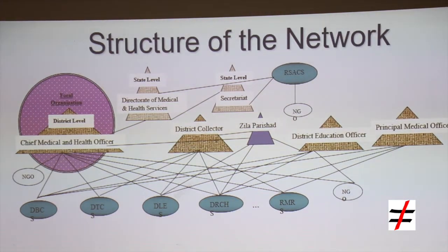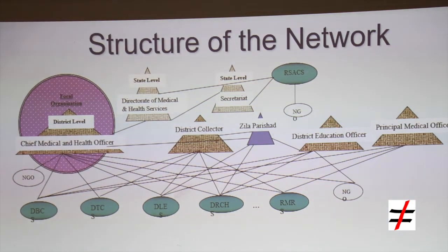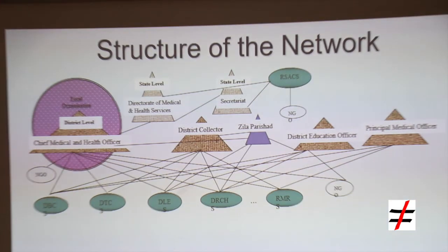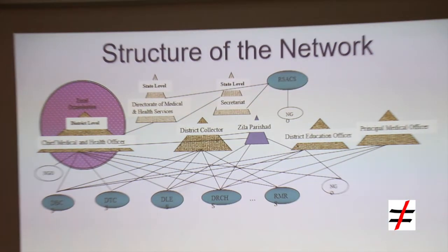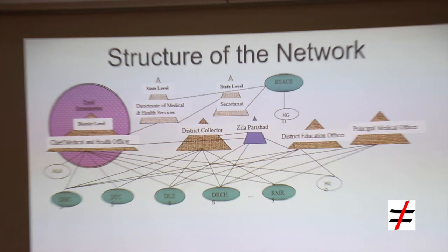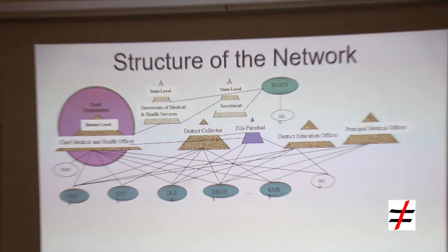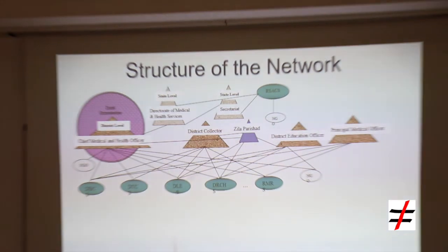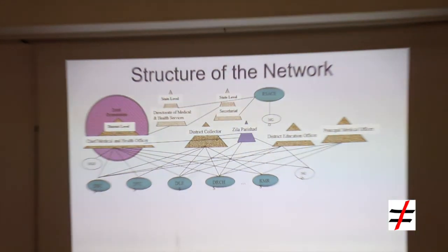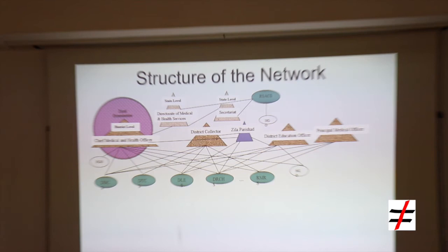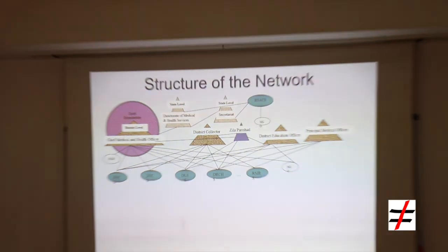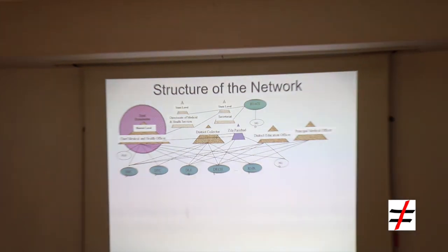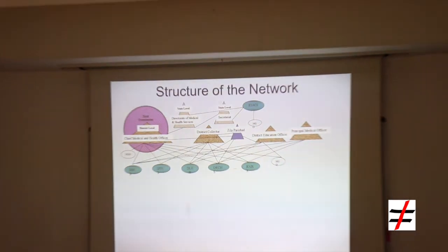I have also conceptualised the formation of agencies, which is called agentification. At the state level there is the Rajasthan State AIDS Control Society, which is a separate agency from the government. At the district level there are agencies like the District Blindness Control Society, District RCH Society, and Rajasthan Medicare Relief Society. The partnerships are made operational through these agencies at the district level.